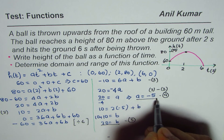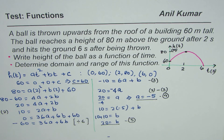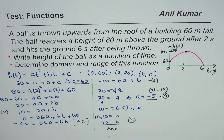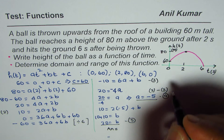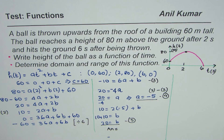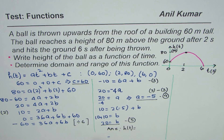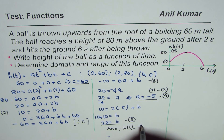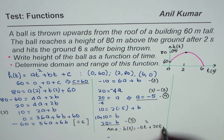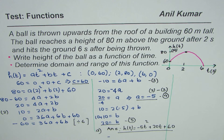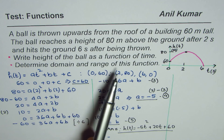We now have a = −5, b = 20, and c = 60. So for part (a), the equation is h(t) = −5t² + 20t + 60. That is the answer for part (a).